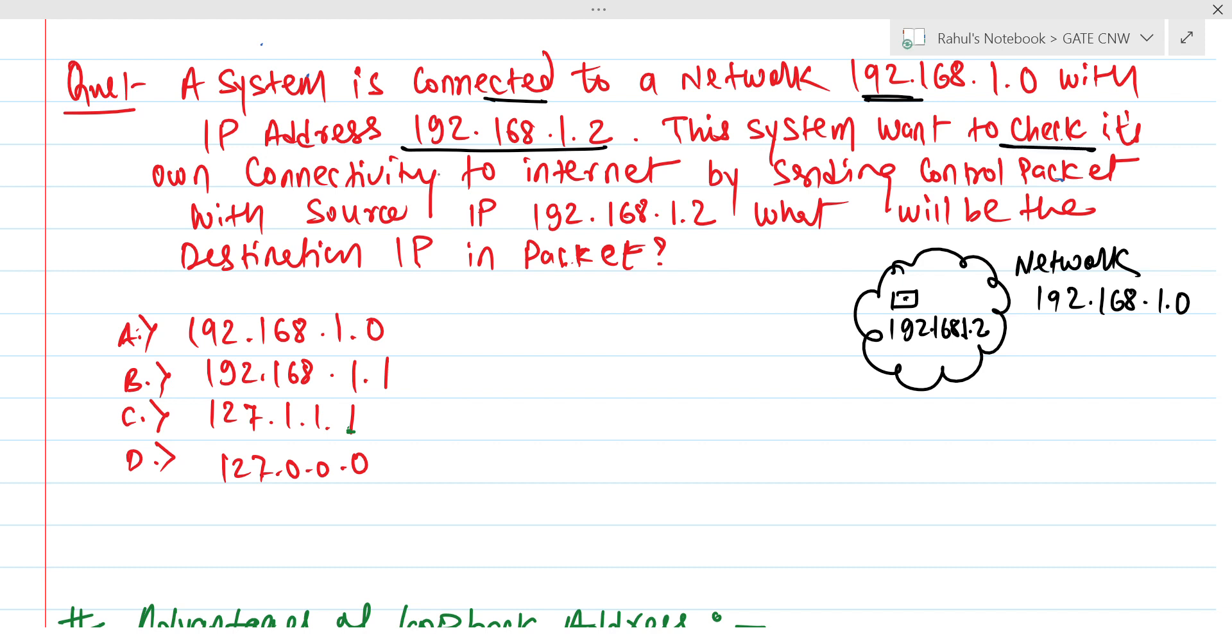This system wants to check its own connectivity to internet by sending a control packet with source IP as this. From application layer onwards, the message is part of the application layer and it wants to check its own connectivity.